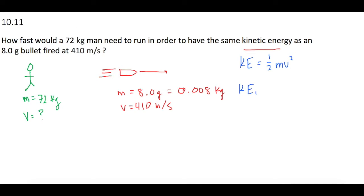So the kinetic energy of the bullet is equal to 1 half of the mass, so 0.008 kilograms times its velocity of 410 meters per second squared. So the mass, let's plug that in, 0.5 times 0.008 times 410 squared. That is equal to 672.4 joules.